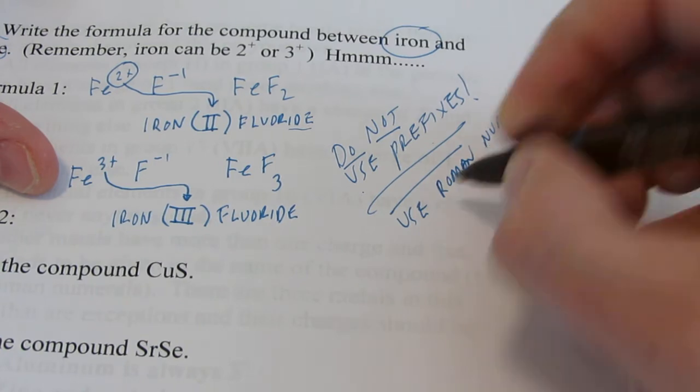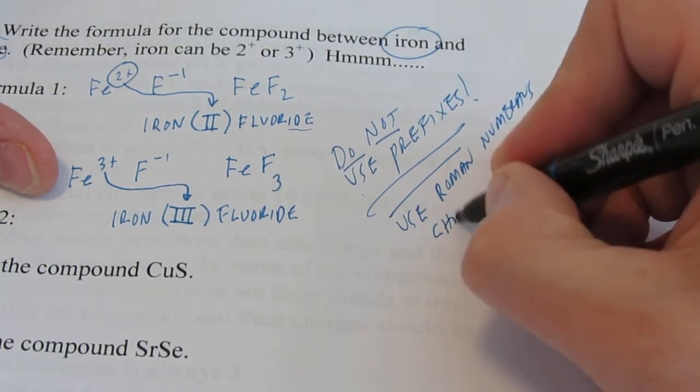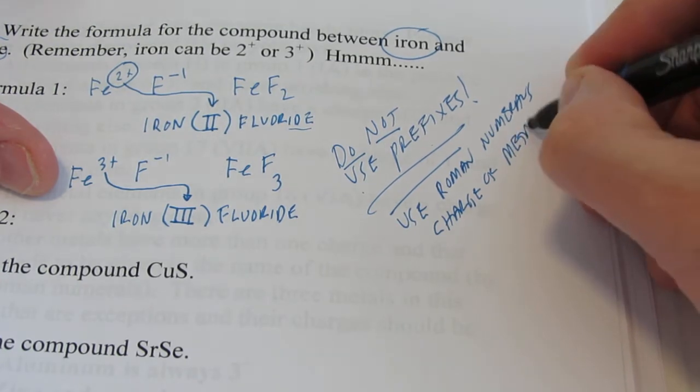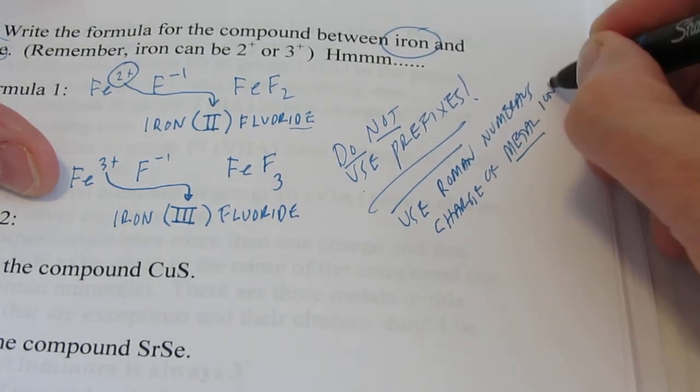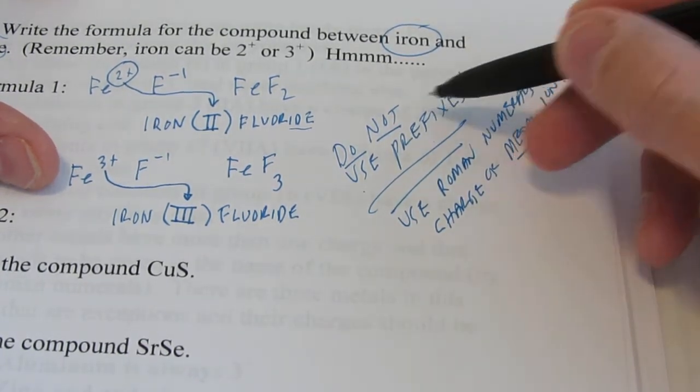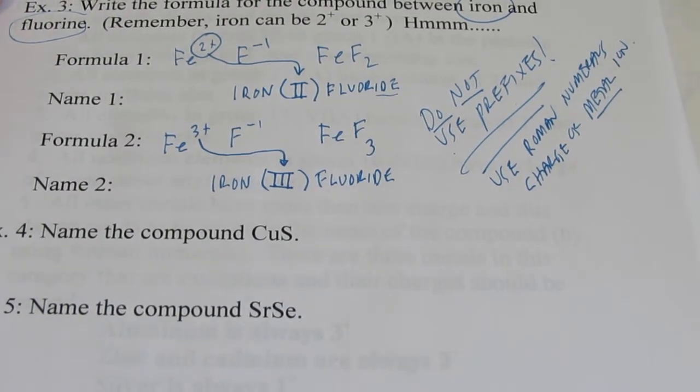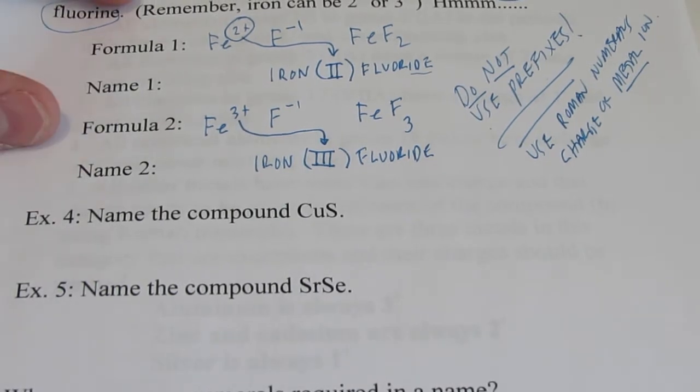Well, when a metal ion can have more than one charge, we use Roman numerals. And what do the Roman numerals tell us? The charge of the metal ion. Do not use prefixes. We use Roman numerals. And that tells us the charge of the metal ion.